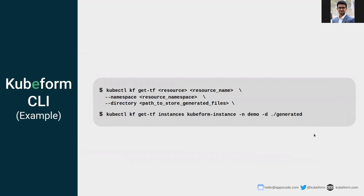Let's look at an example. The demo command is basically 'kubectl qf gettf', and we need to provide the resource kind in singular or plural lowercase form, followed by the resource name. There is also a namespace flag to specify the resource namespace, and a directory flag. If the directory flag is provided, it specifies the path where the generated files — main.tf and terraform.tfstate — will be stored. If not given, the generated files will be printed to the console.